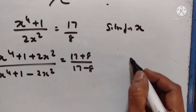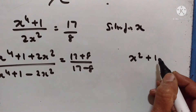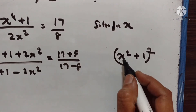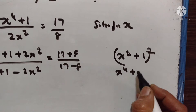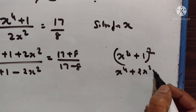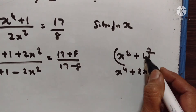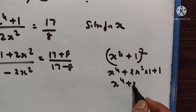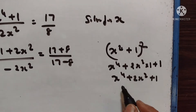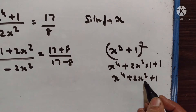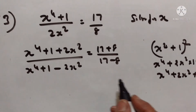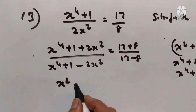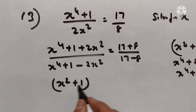Now the numerator x to the power 4 plus 2x squared plus 1 is in the form of x squared plus 1, the whole square. First one squared, 2 into first one into second one, plus second one squared — x to the power 4 plus 2x squared plus 1. This is in the form of a squared plus 2ab plus b squared, so this is equal to x squared plus 1, the whole square.